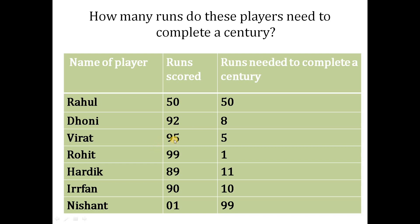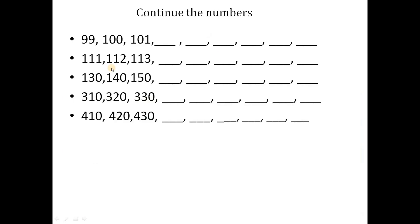Dhoni 92, Virat 95, Rohit 99, Hardik 89, Irfan 90, Nishant 1. The question asks: how many runs are needed to complete a century? We know that one century means 100. So Rahul needs 50 more runs to complete a century, and so on for each player.